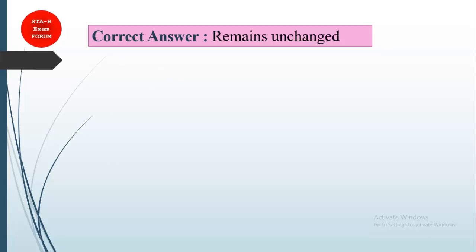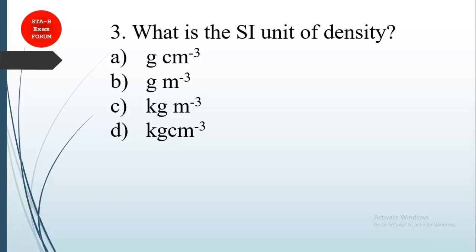Coming to the next question, this is from physics again: what is the SI unit of density? All these are density units, but they have asked for the SI unit, so the correct answer is option C: kg per meter cube. What is the formula for density? Mass upon volume. What is the standard SI unit for mass? kg. And for volume? meter cube. So the correct answer is option C.